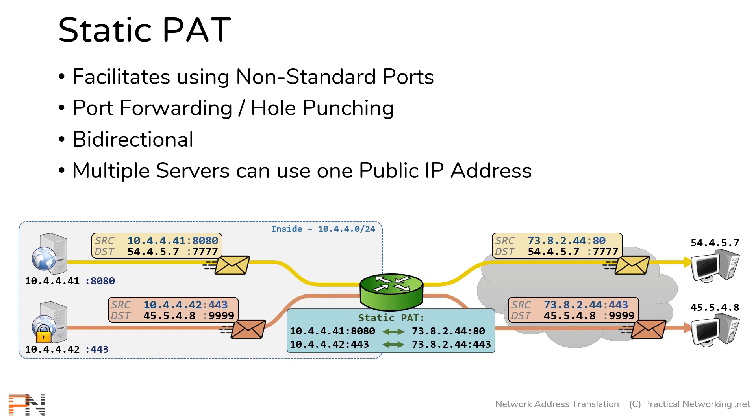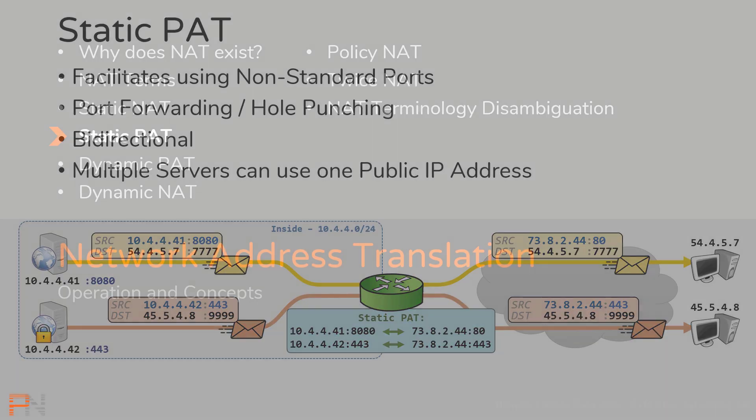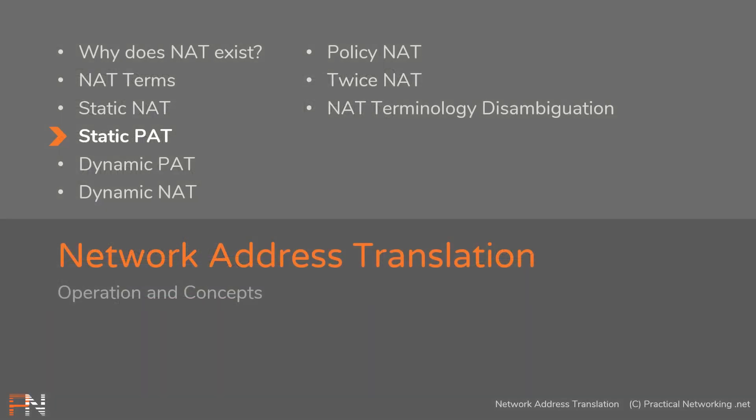So that's our lesson on static PAT. The key takeaway is that a static PAT is an explicit mapping between one IP address and port and another IP address and port. I hope you enjoyed this video — thanks for watching and we'll see you in the next one.